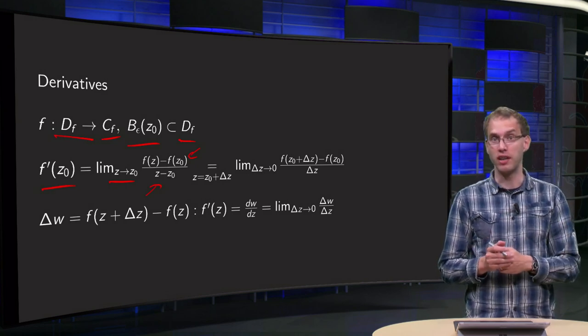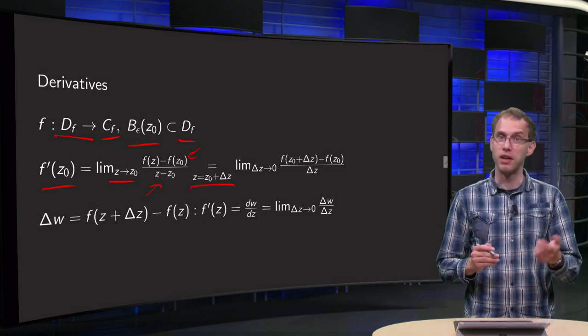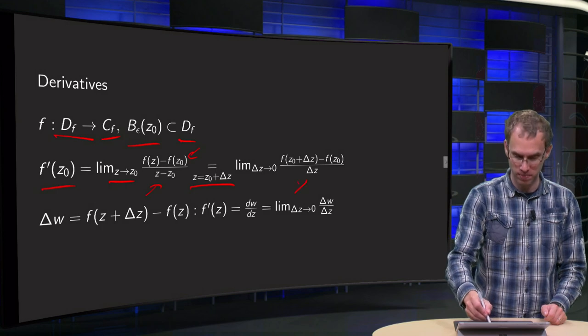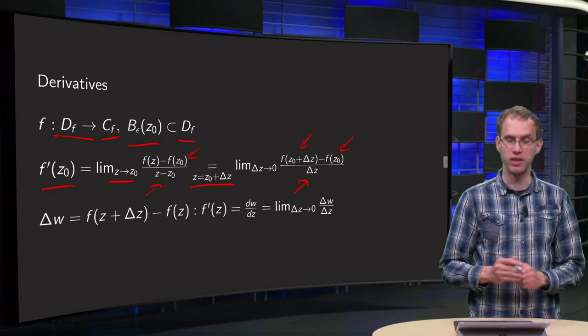And you can rewrite that a bit if you like by setting z equals z0 plus delta z. Then z minus z0 becomes delta z. f(z0) stays where it is, and f(z) becomes f(z0 plus delta z).